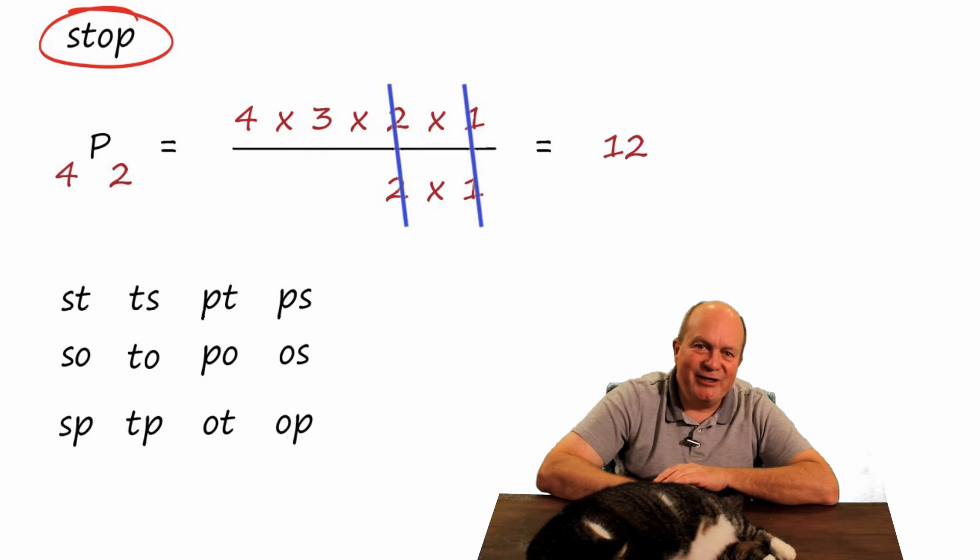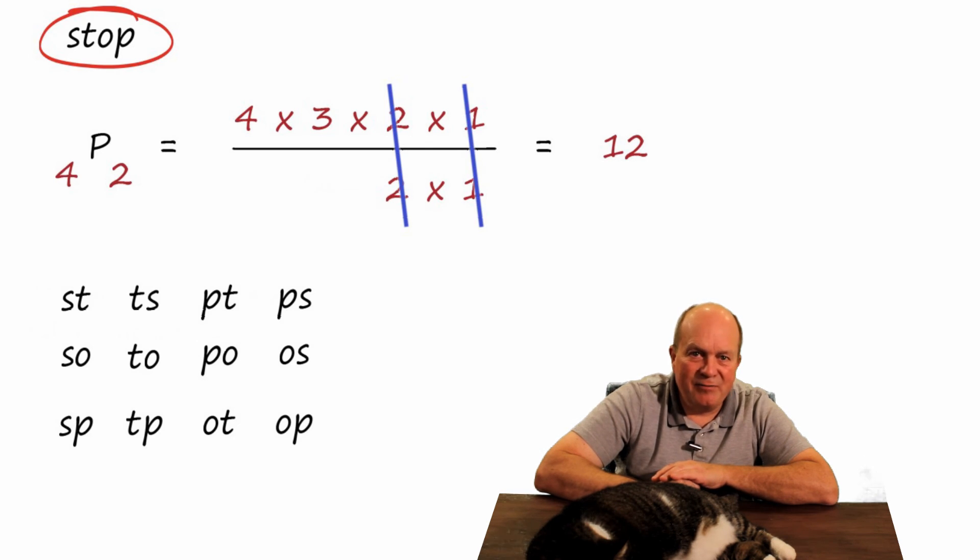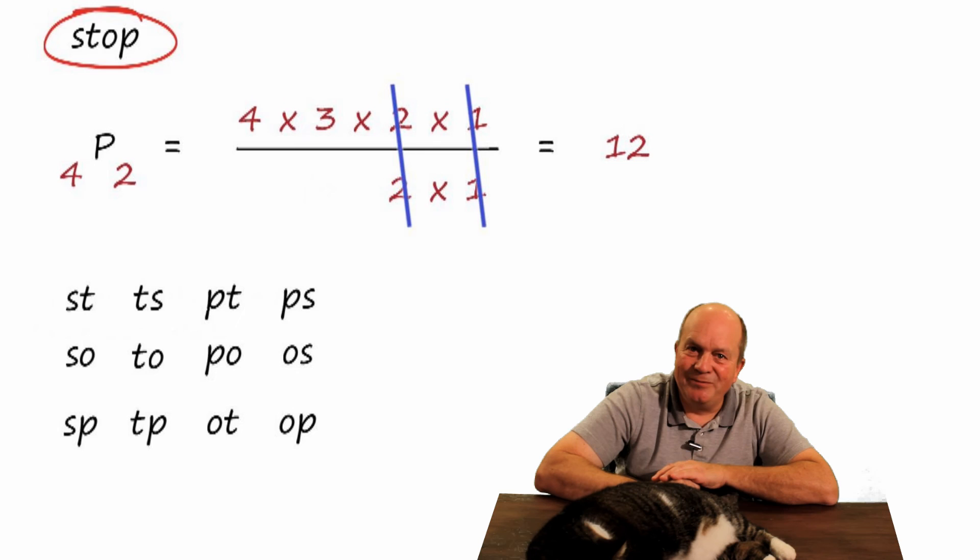That's how you calculate the number of permutations you can make from an original word without repeating the letters. I'm going to put up a link right now to a video that shows you how to calculate the number of permutations you can make if you can repeat the letters. And then I have one more video, I'm going to put up a link right now, that shows you what to do if the original word has one or more sets of repeating letters, but the permutations cannot repeat beyond that in the original word. Then you'll have all the calculations you need.